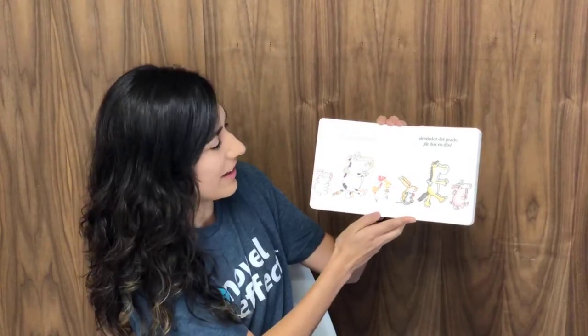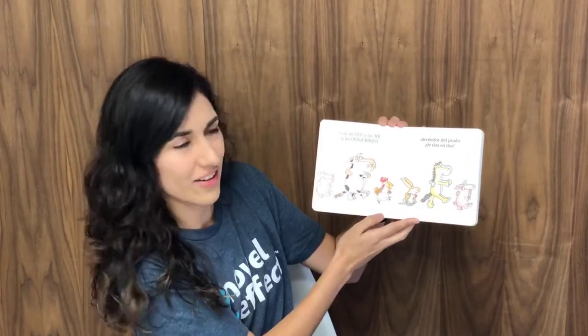Con un B y un G y un Kikiriki. Alrededor del prado de dos en dos.